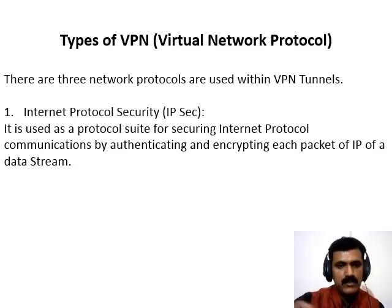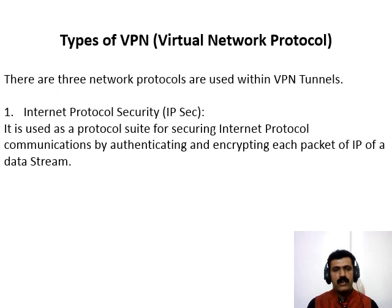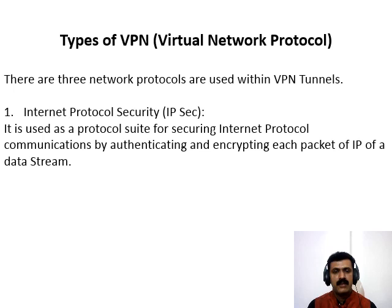Now let us see the types of VPN protocols. There are three network protocols used within VPN tunnels. The first is Internet Protocol Security (IPSec). We can make use of this protocol for encryption. It is used as a protocol suite for securing internet protocol communications by authenticating and encrypting each IP packet of a data scheme. It requires expensive, time-consuming client installation, which is its most significant disadvantage.